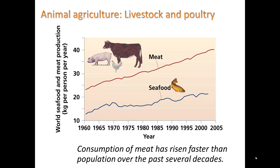Let's take a look at this graph. We have meat production in red, seafood production in blue, starting in 1960 up until 2005. We can see that they have both increased, and they have actually increased faster than population growth. So there's a greater amount of meat being eaten per person.